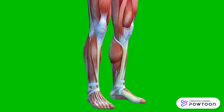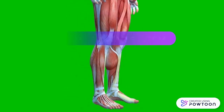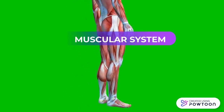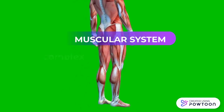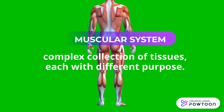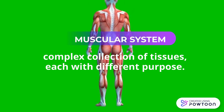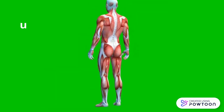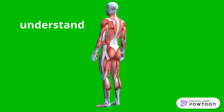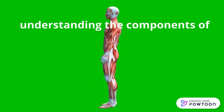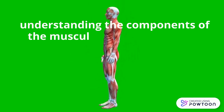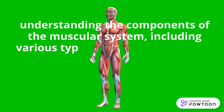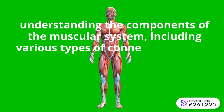Hello students, today let's discuss the muscular system. It is a complex collection of tissues, each with a different purpose. Understanding the components of the muscular system, including the various types of connective tissues, is a good way to understand how bodies and physical movement work.